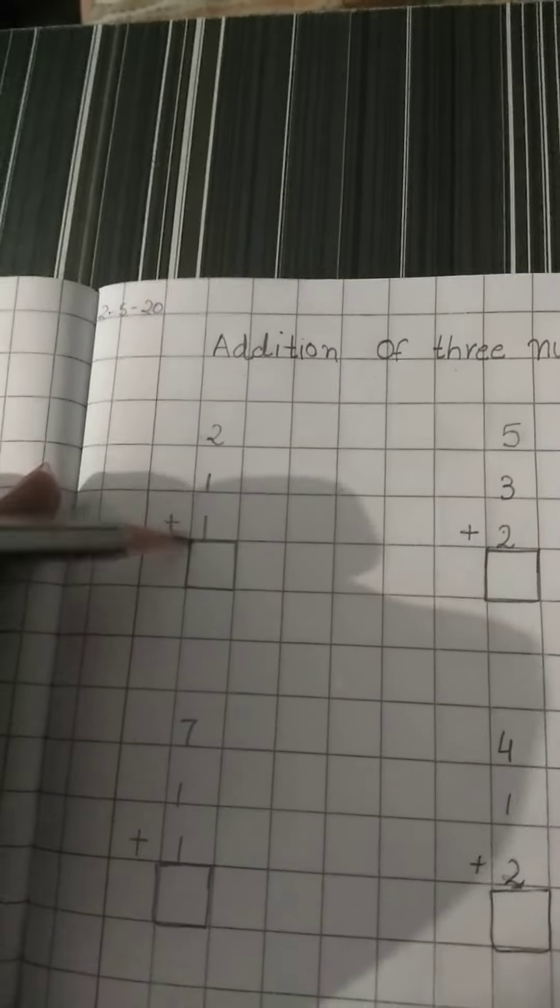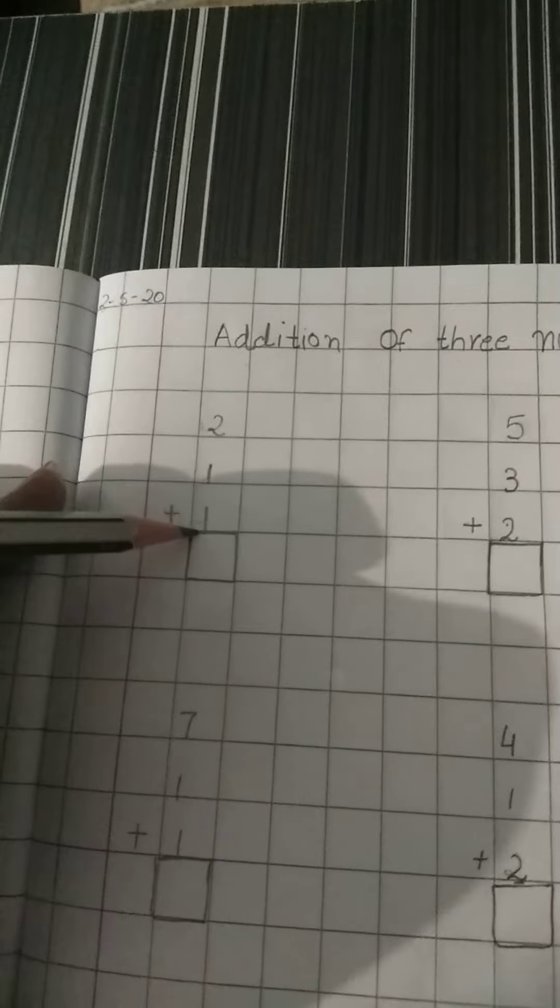Now can you see this? How many numbers are there? Three. You can see there are three numbers. 2, 1, again 1.